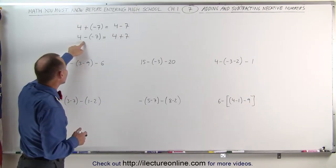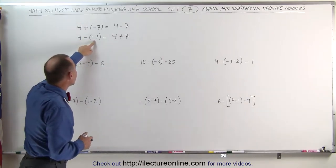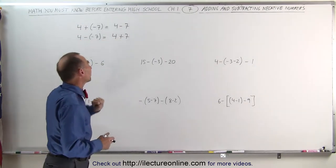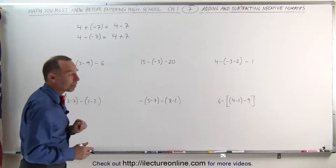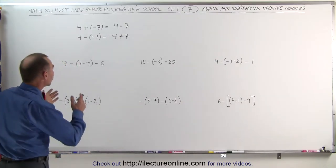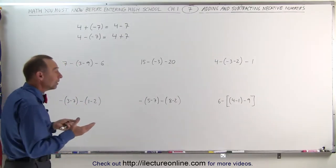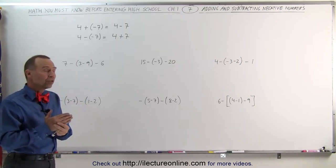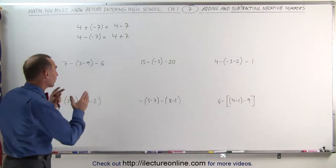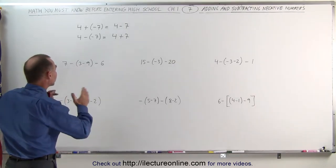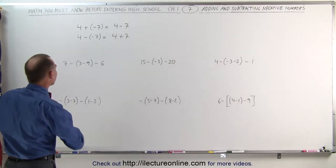So 4 plus a negative 7 is the same as 4 minus 7. But if you subtract a negative number, that is the same as adding the opposite of the number. In other words, 4 minus a minus 7 is the same as 4 plus 7.